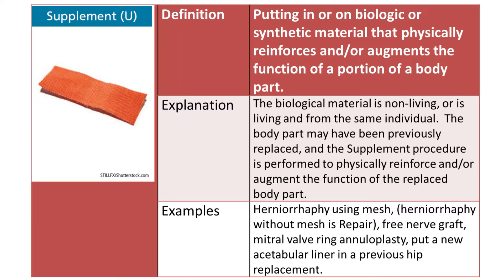Examples of the Supplement root operation include herniorrhaphy using a mesh, free nerve grafts, mitral valve ring annuloplasty, and putting in a new acetabular liner in a previous hip replacement.